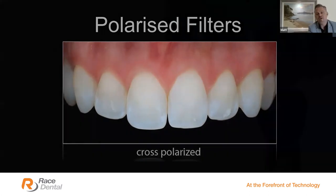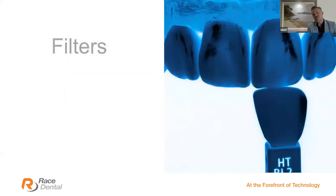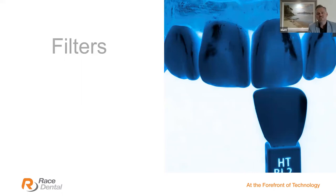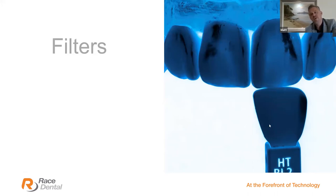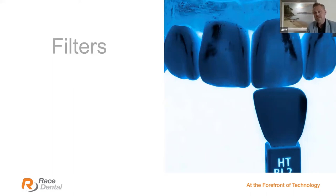There are lots of different filters we can use. This reverse filter highlights the value of our ingot selection — I can clearly see this needs to be a high-translucent ingot. You'll see the high-translucent shades placed against the restoration when finished just to see how true it is. I like this filter when making my ingot selection, predominantly for Emax and Emax CAD restorations.